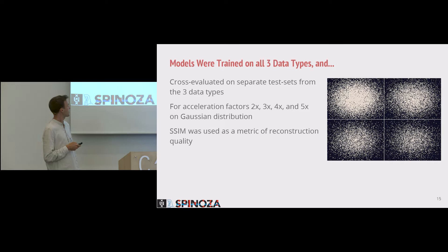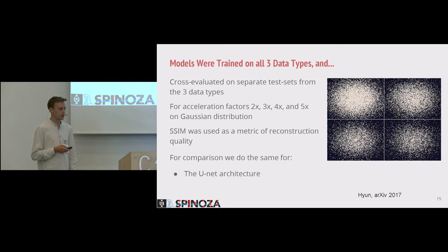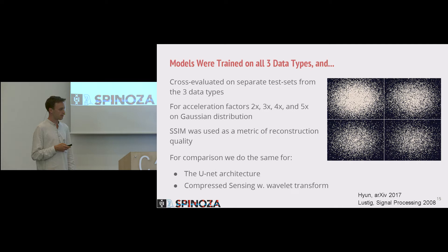As a metric for reconstruction quality, we use the structural similarity index. To compare against other models, we train a U-Net architecture for reconstruction, which was proposed in an arXiv paper. We also compare against compressed sensing using a wavelet transform as the sparse transformation, which is optimal for brain images.